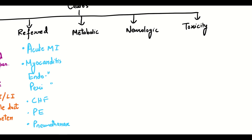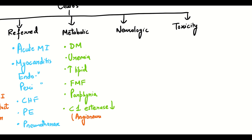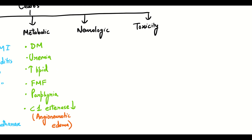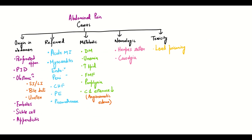Moving on to metabolic causes: diabetes, uremia, hyperlipidemia, familial Mediterranean fever, porphyria, C1 esterase deficiency which leads to angioedema — these will also cause pain in the abdomen. In neurologic pain, herpes zoster and causalgia, as already discussed in the pain video, will lead to pain in the abdomen. Last of all, toxicity — lead poisoning will also cause pain in the abdomen.